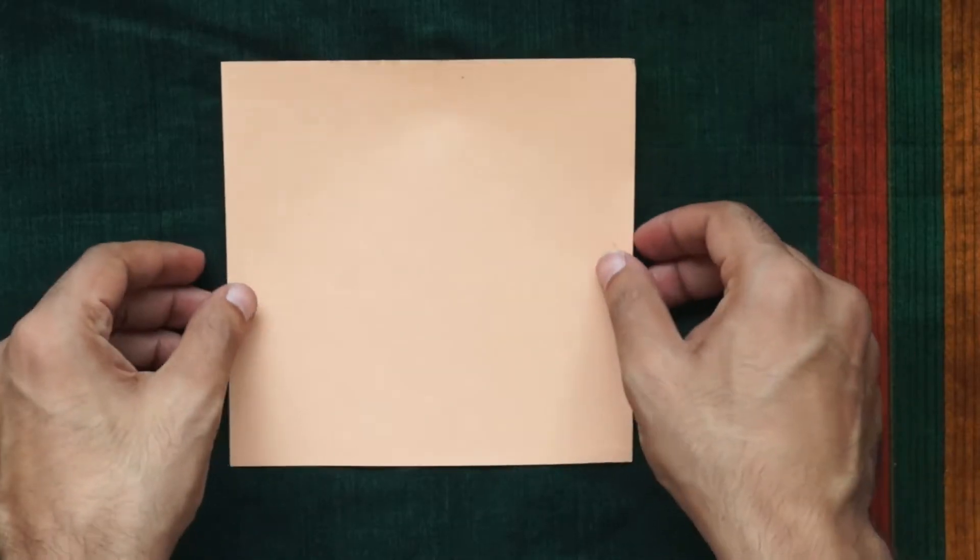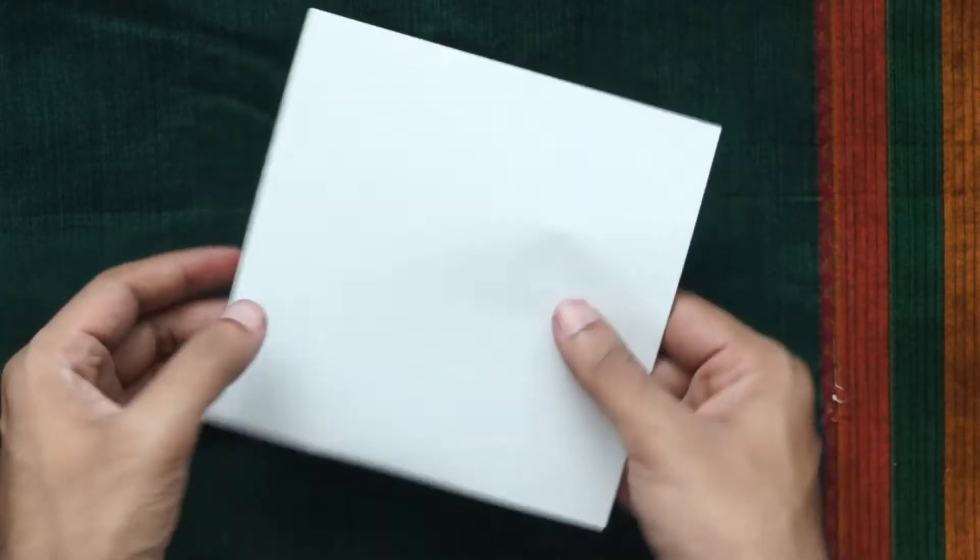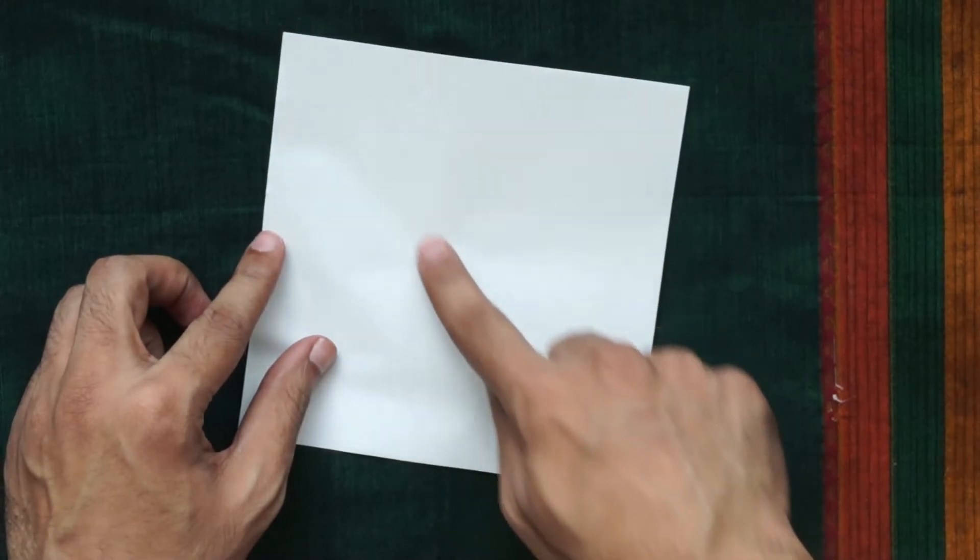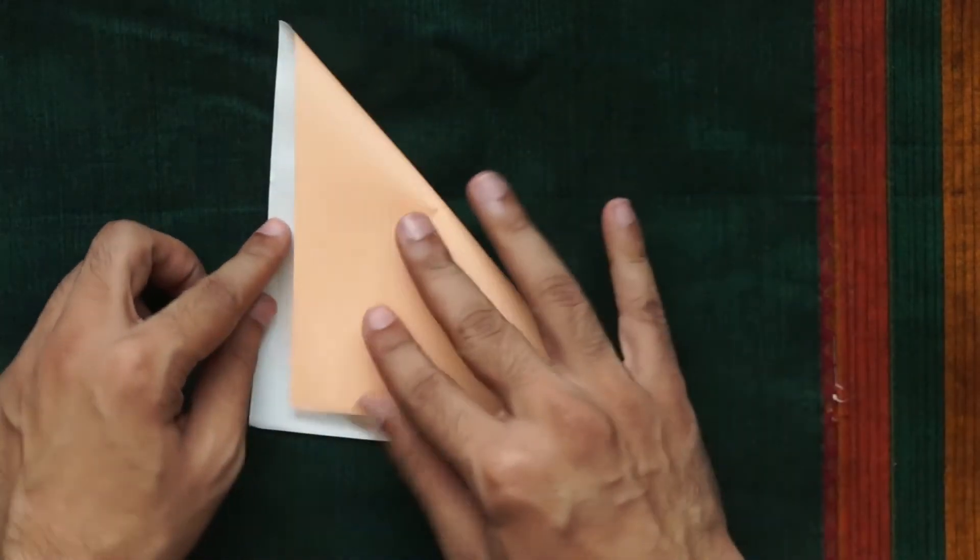This model works best with paper that's not too thin. With the square paper color side down, fold along one diagonal and unfold flat.